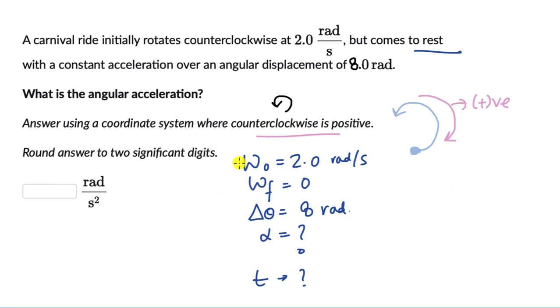Alright, so ideally we should pick one which does not have the variable of time because there is no way for us to figure out what time is. We need to figure out alpha, the angular acceleration, but we don't know what time is. So let's go ahead with an equation which doesn't have the variable time. And that one is this one right here.